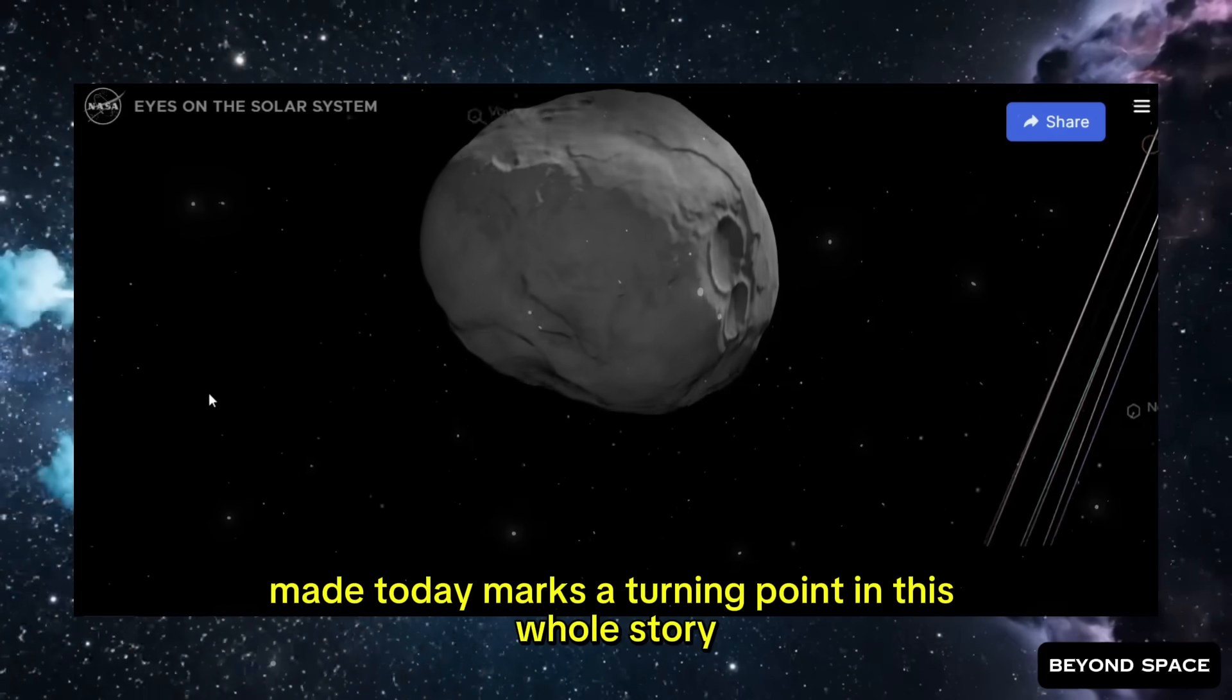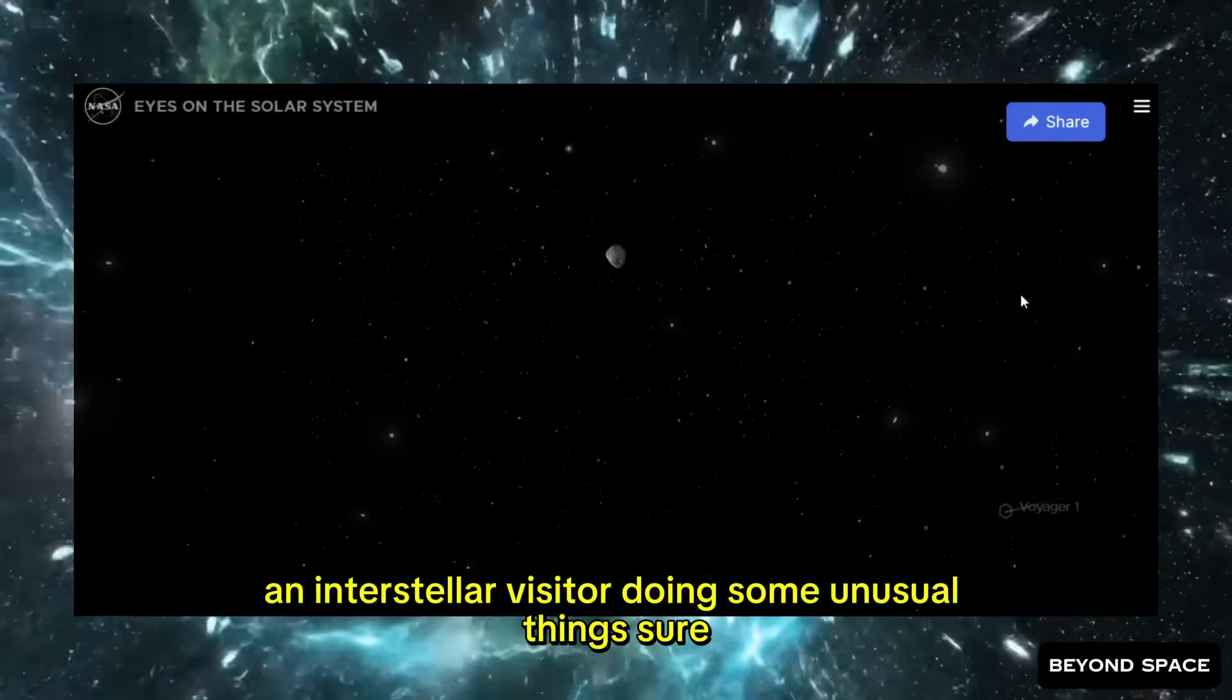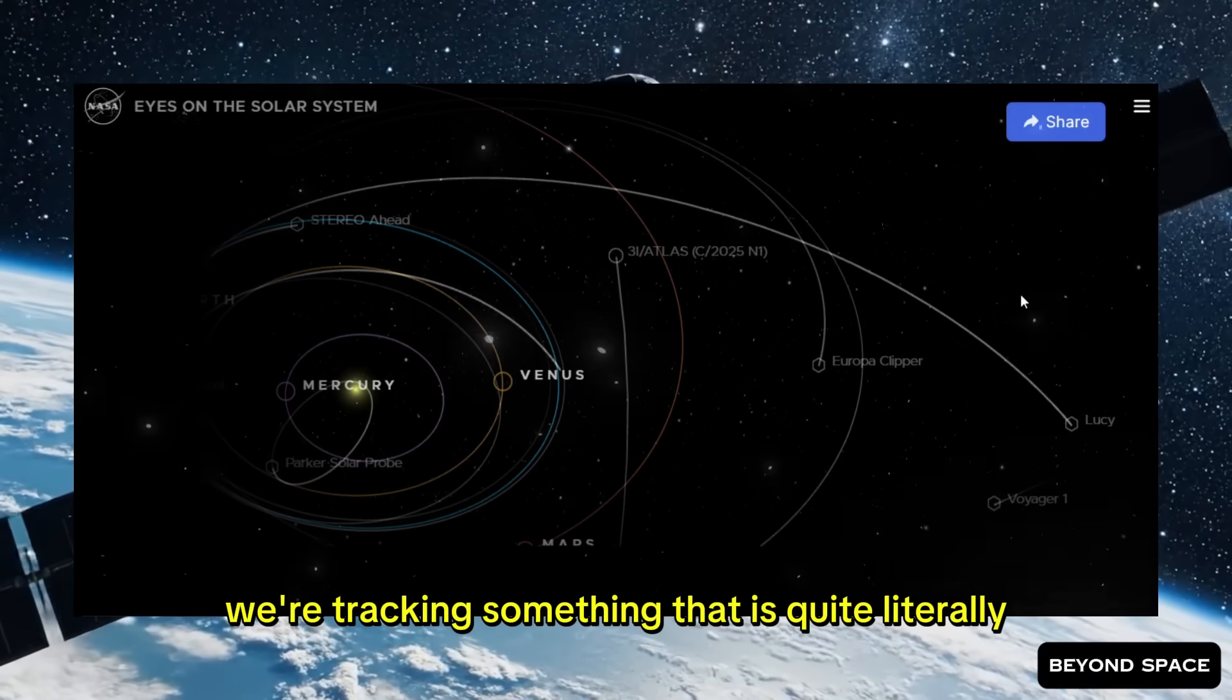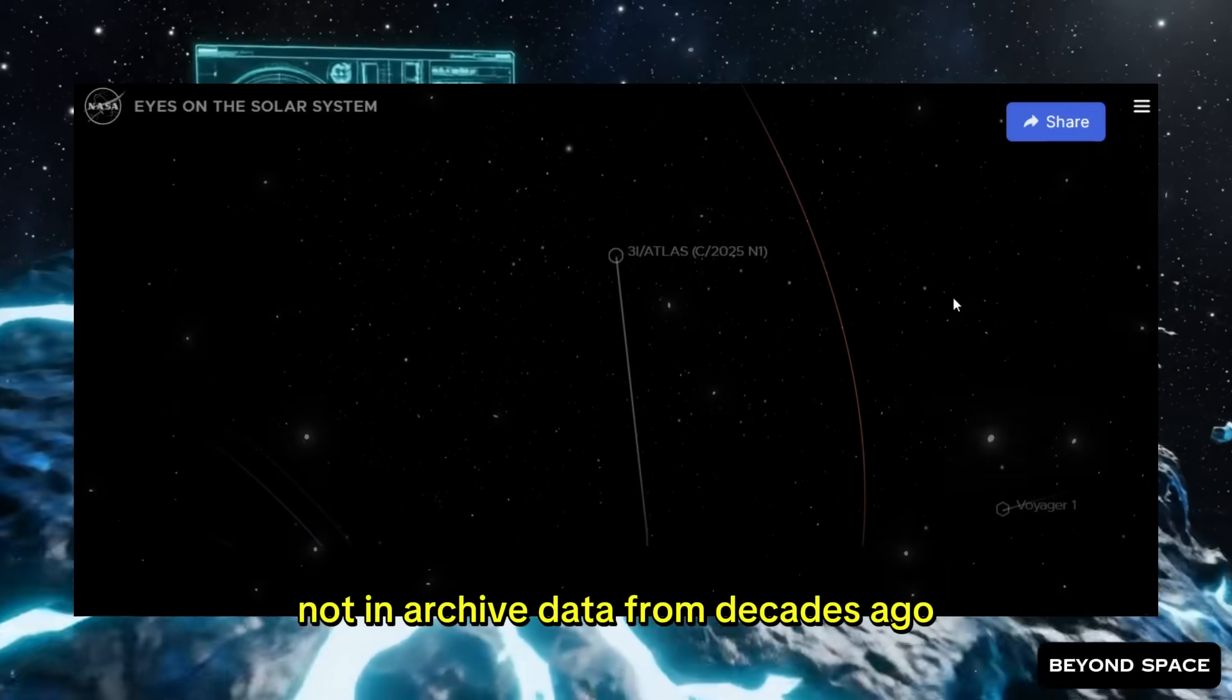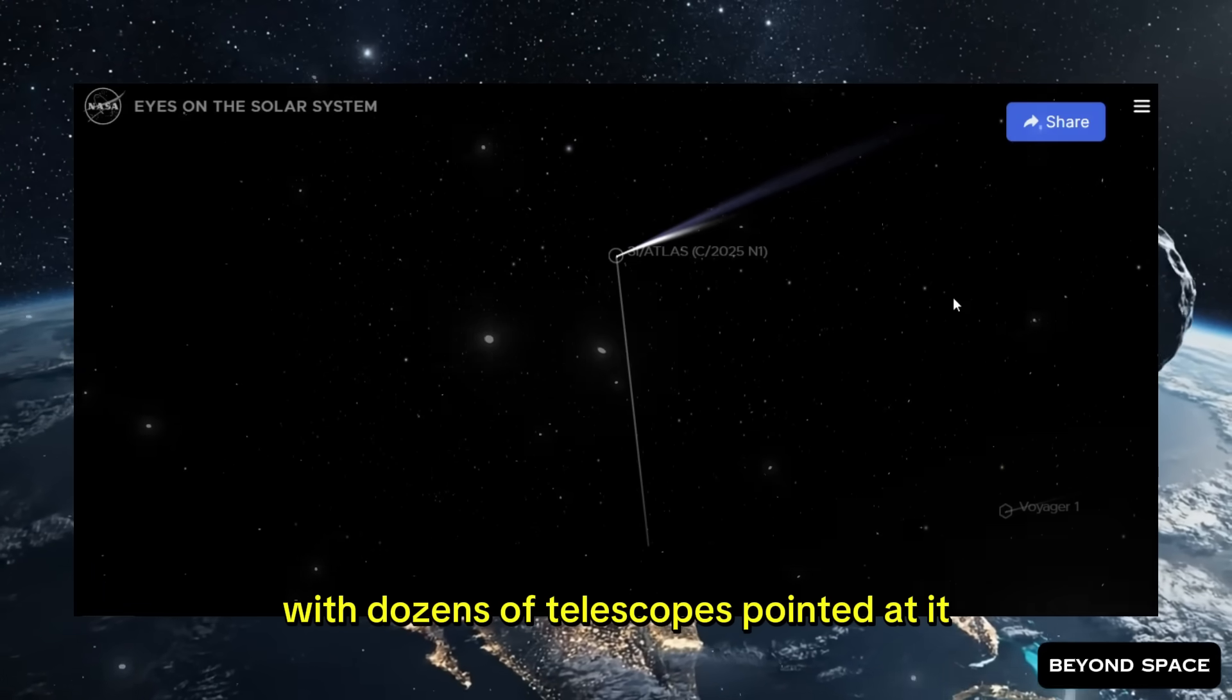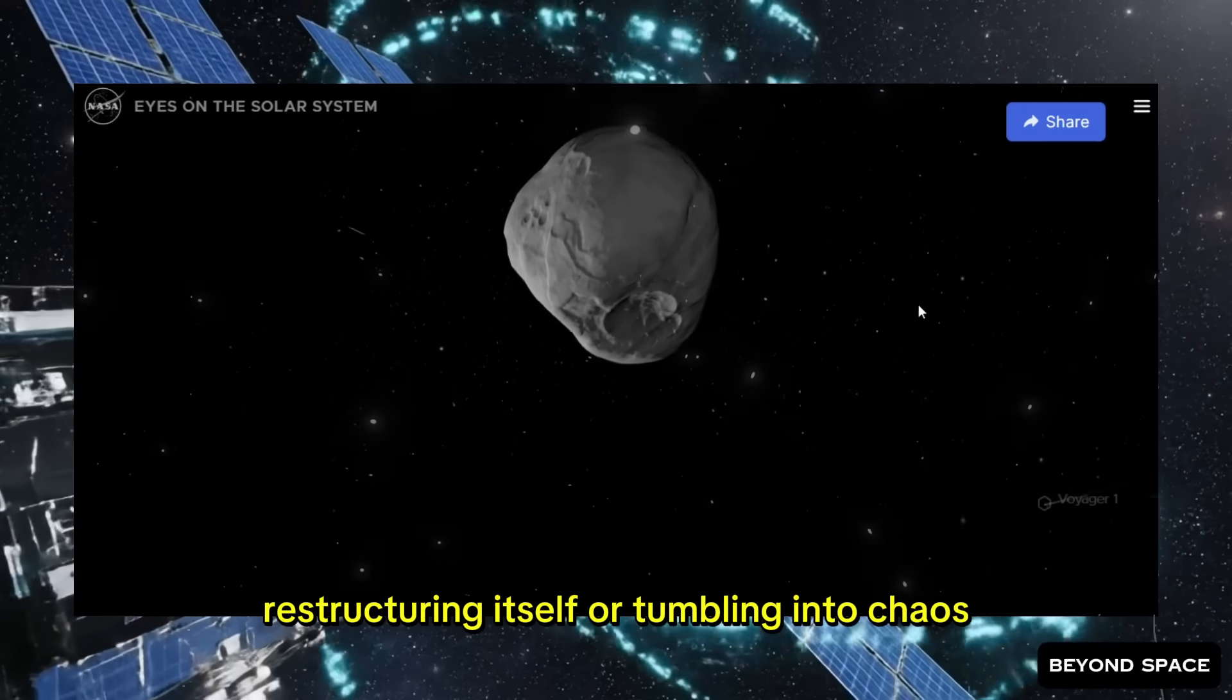The discovery NASA made today marks a turning point in this whole story. Before today, we were tracking one weird, powerful comet from another star system. An interstellar visitor doing some unusual things? Sure. But still fundamentally one object with one identity. After today, we're tracking something that is quite literally changing its identity as we watch. And this is all happening right now. Not in archived data from decades ago. Not in some distant galaxy where we can only see the aftermath. Right now, in our solar system, with dozens of telescopes pointed at it, capturing every moment. Whatever 3i Atlas just changed into, whether it's splitting apart, restructuring itself, or tumbling into chaos, we're going to find out.